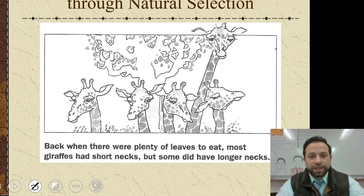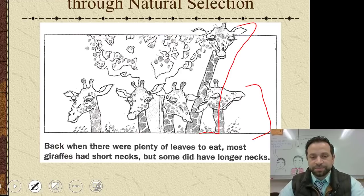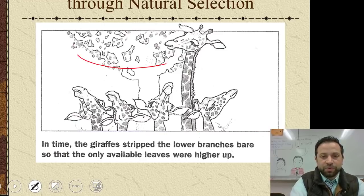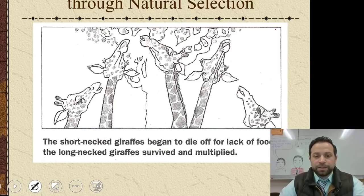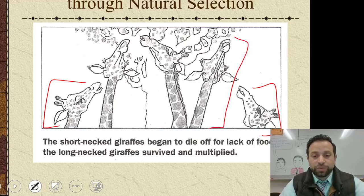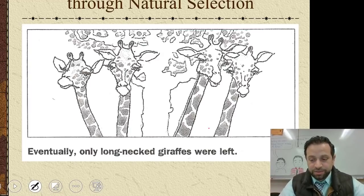Here's Darwin's evolution by natural selection with the same giraffe example. Back when there were plenty of leaves, most giraffes had short necks, but some did have longer necks — that's variation. In time, giraffes stripped the lower branches bare. The short-necked ones started to die off because they couldn't eat; the taller ones survived, reproduced, and gave their offspring long necks too. Eventually only long-neck giraffes were left. This is Darwin's theory of evolution, which is correct.